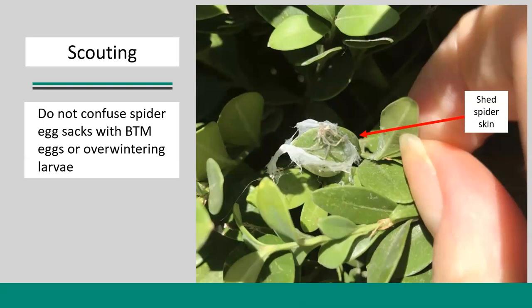Be aware not to confuse spider egg sacs with BTM eggs or the overwintering stage of BTM. In the photo here, we can see some webbing and might question whether it's BTM — but in this case we can clearly see a shed spider skin. If you find any sort of webbed structure on your boxwoods, just open it up. If you do see any collection of what you would consider eggs, know that BTM eggs will never be contained in any sort of webbing, so this would most likely be a spider egg sac.